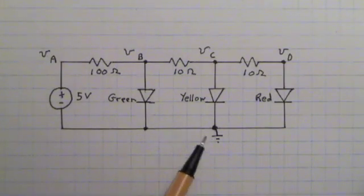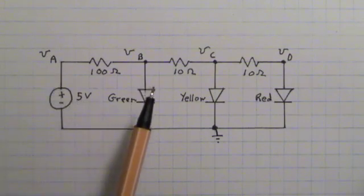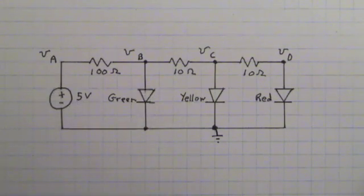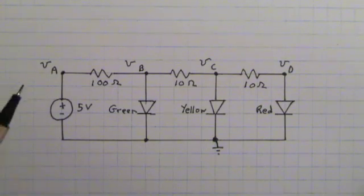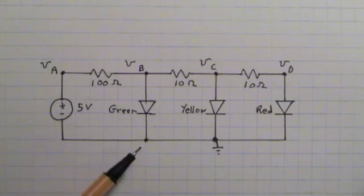So here's the reference node and here's the four node voltages, V sub A, V sub B, V sub C, V sub D. So if this were an actual circuit, I could measure V sub A by putting the red lead of the voltmeter here, the black lead here, and measure the voltage. That would be the node voltage V sub A.